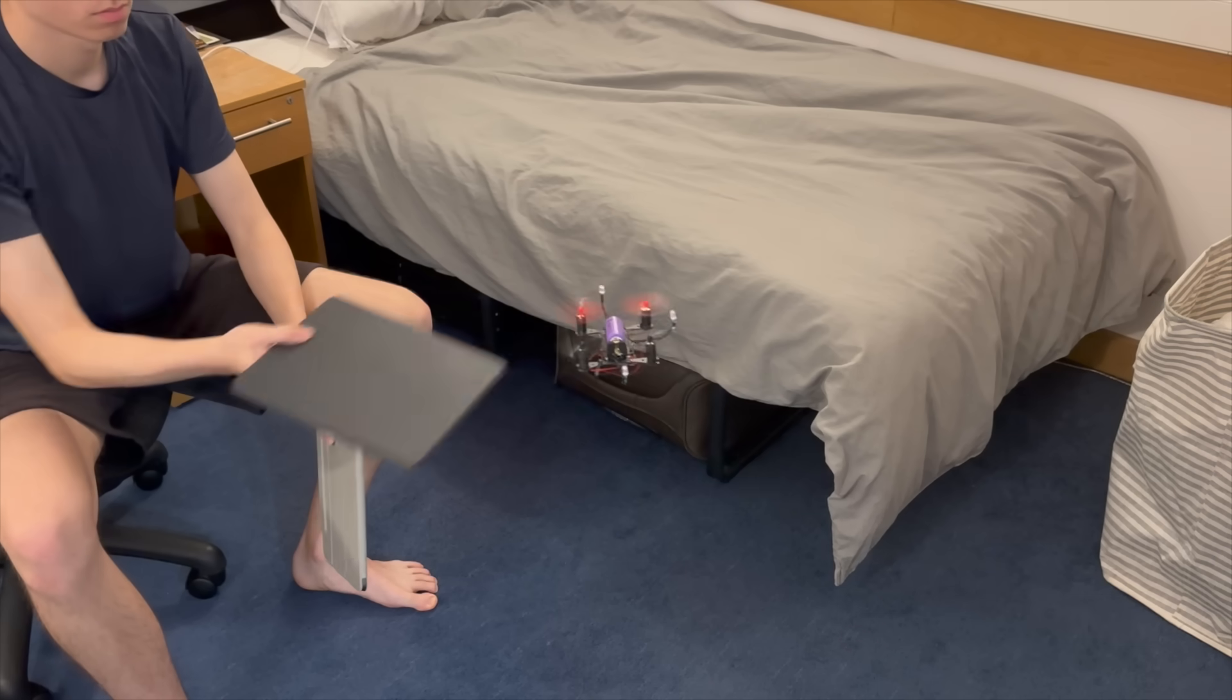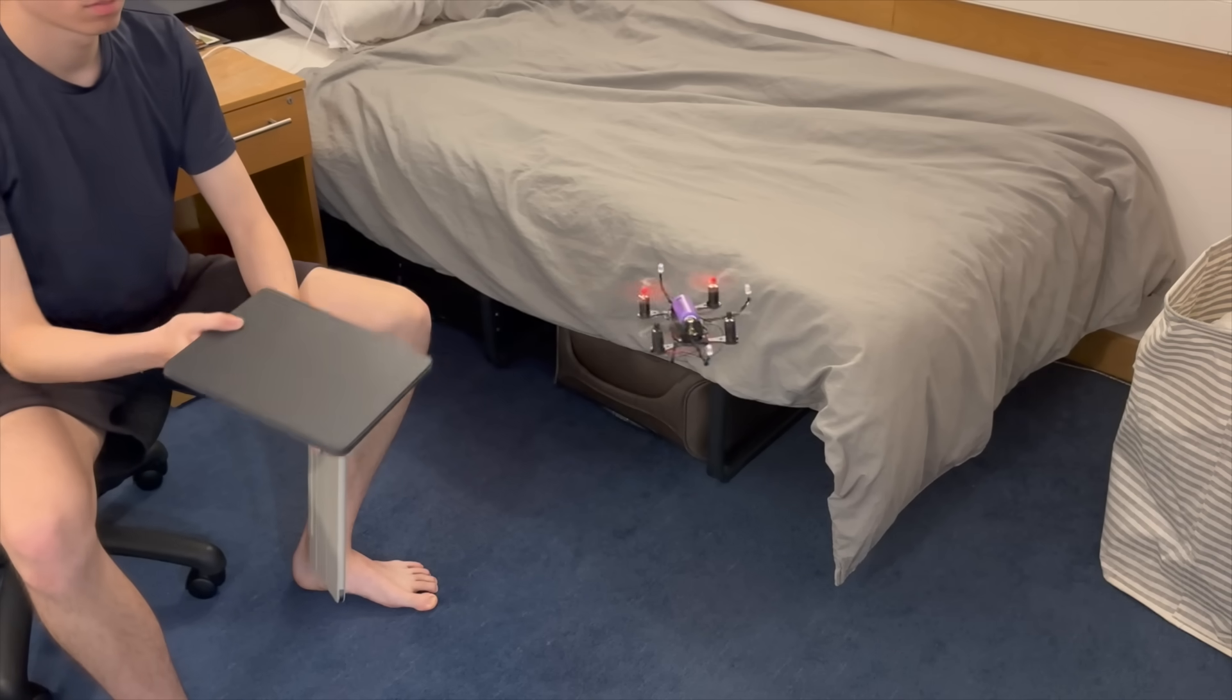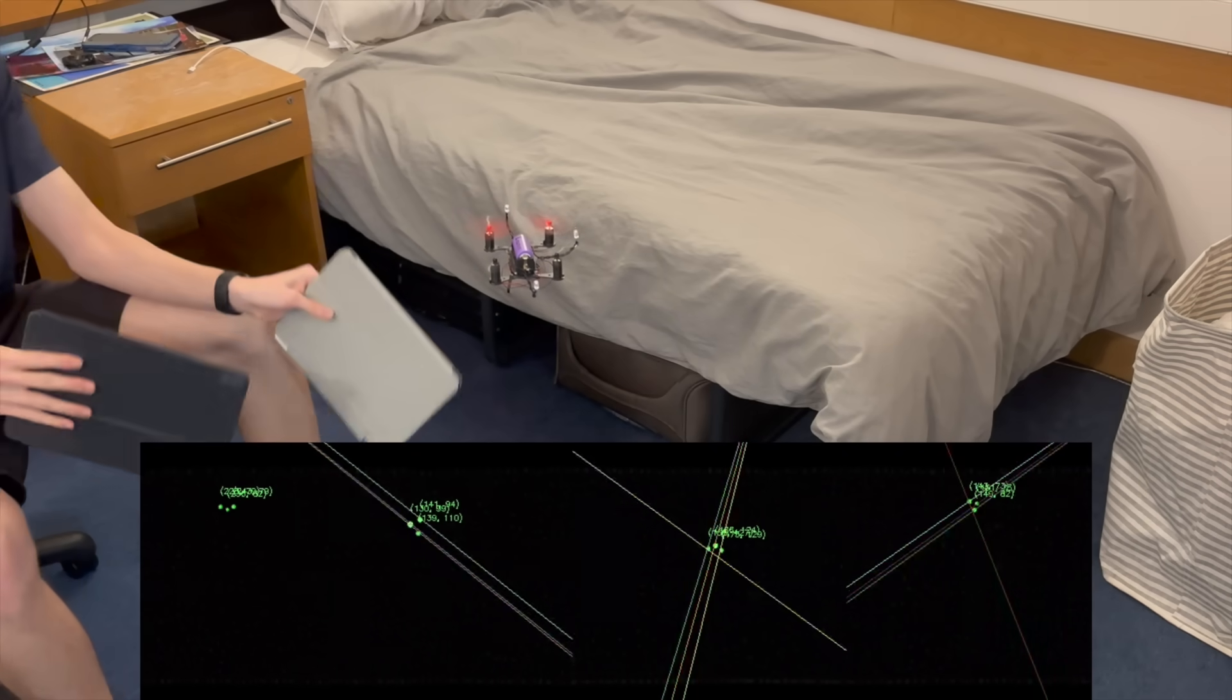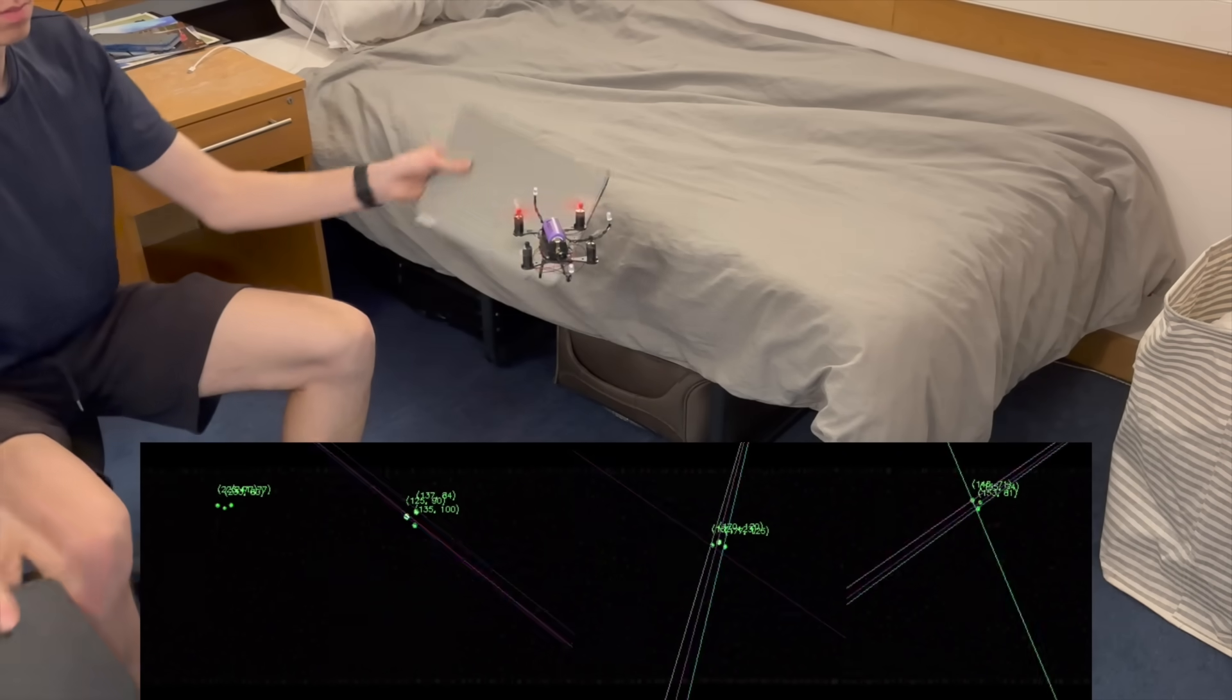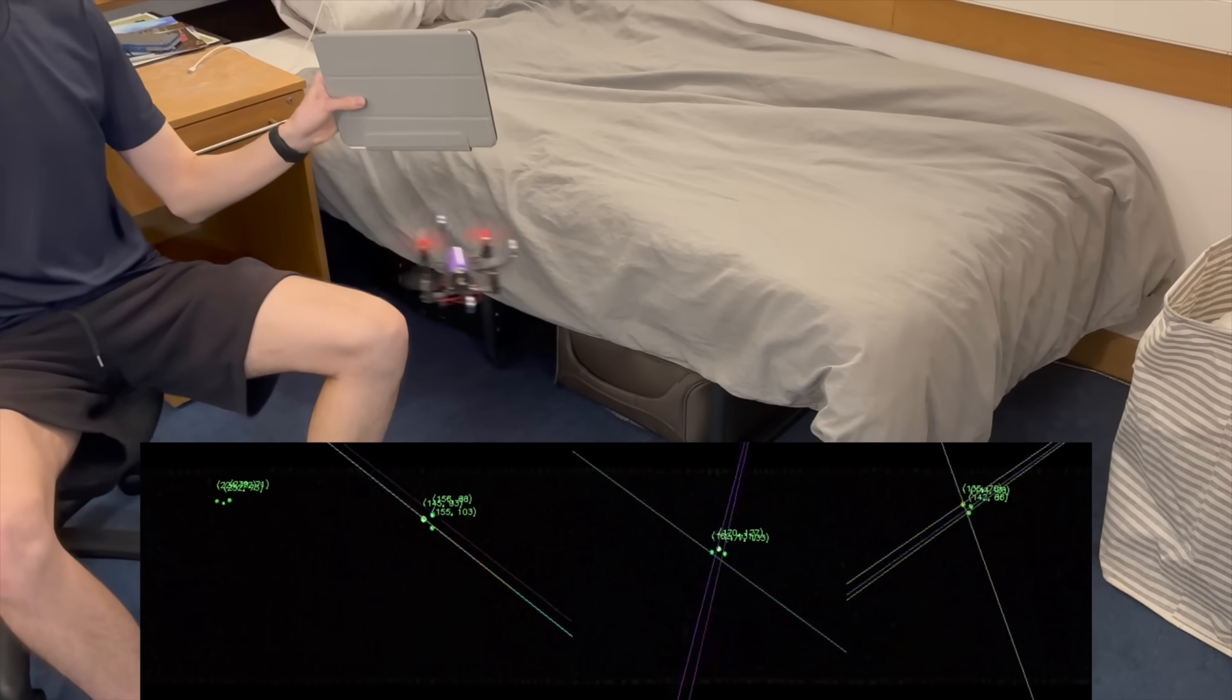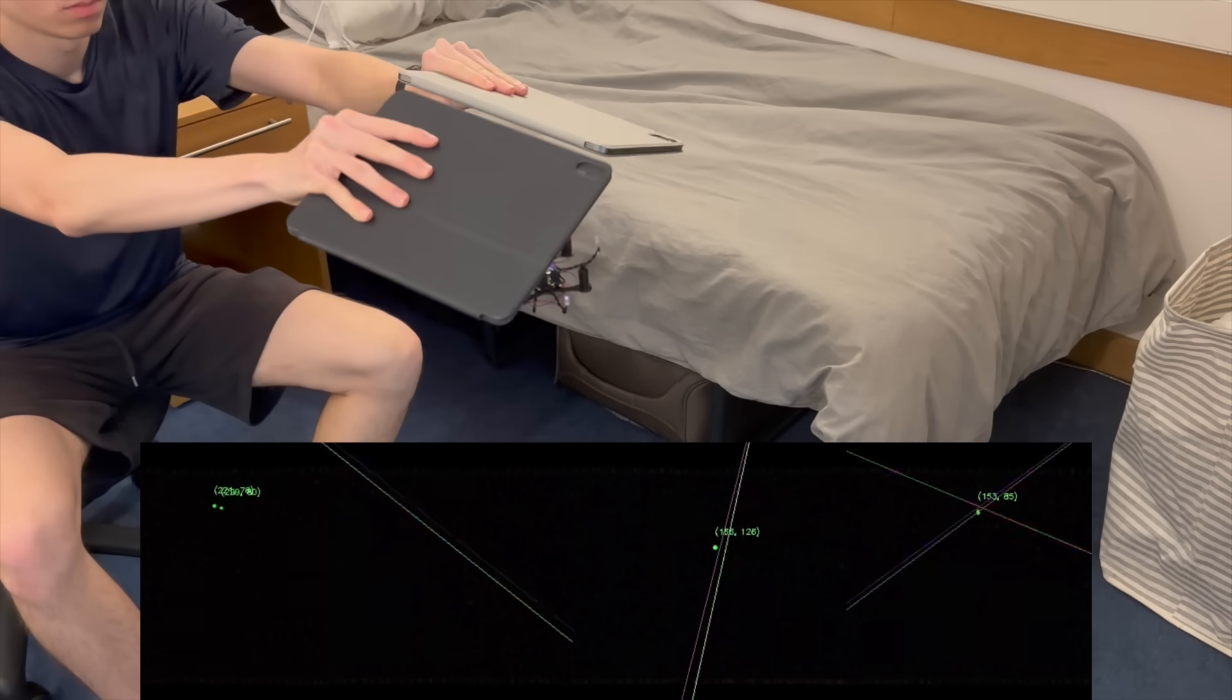The system's triangulation is also extremely tolerant to occlusions of any camera's view, as you can see here. Each point only has to be seen by two cameras to be tracked, with each additional view providing extra accuracy. Even when positioning is completely lost, the drone is still able to seamlessly recover.